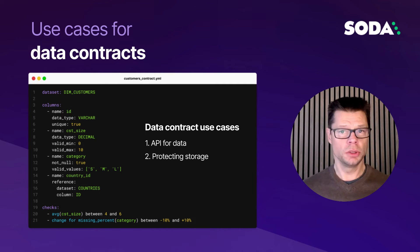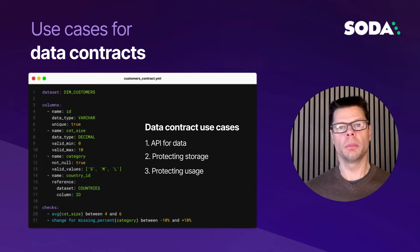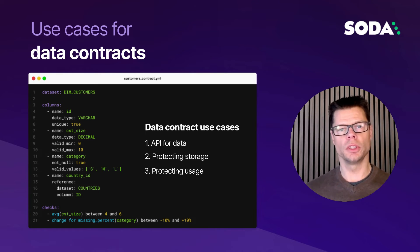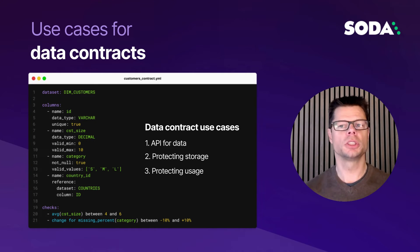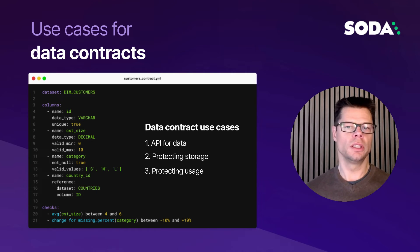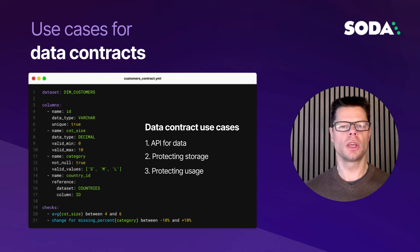The third use case is protecting usage. Data consumers often have intimate knowledge about data and specific requirements for their usage. Consumers should be able to propose data quality checks to be included in the contract, creating much better coverage over the data they use. To summarize, the three key use cases are: API for data, protecting storage, and protecting usage.